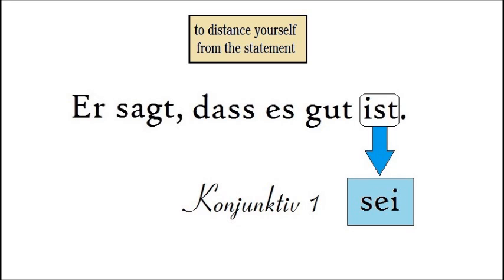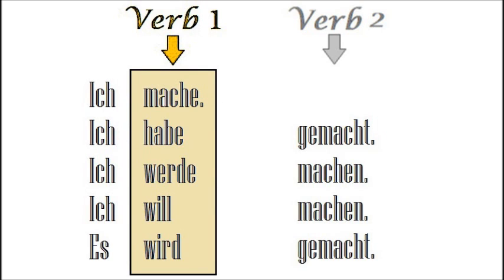How is the Konjunktiv 1 form constructed? For all tenses, you take the first verb — verb 1, that is the conjugated verb — and you use the Konjunktiv 1 conjugation on it. Watch out though: in a subclause structure, that verb will be at the very end of the sentence.